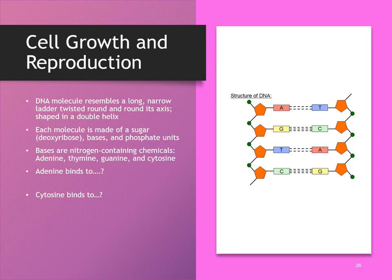Now we're going to switch gears and talk about cellular growth and reproduction. In Chapter 2, we got a preview of DNA and RNA, so now we're going to fill in some of those details. DNA is in the shape of a double helix with molecules called nucleotides, which are made up of three substances: a base, a sugar, and a phosphate. The bases for DNA are adenine, thymine, guanine, and cytosine. Adenine binds to thymine and guanine binds to cytosine — so we have A's attached to T's and G's attached to C's in DNA.